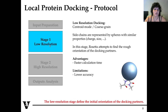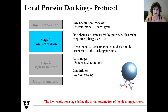The next stage is the low resolution stage, also referred to as centroid mode or coarse grain. In this case, each residue in the complex is represented as a centroid, in which the backbone is defined at each single atom, while the side chain is represented by a sphere representing more or less the size and properties of the amino acid, for example the charge. In this stage, Rosetta attempts to find the rough orientation of the docking partners based on recognition of the true surface. The advantage of low resolution is that calculation will be faster; the limitation is that accuracy will be lower.